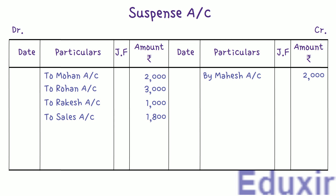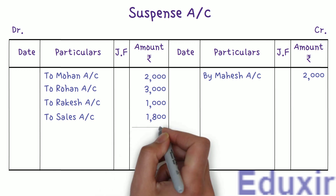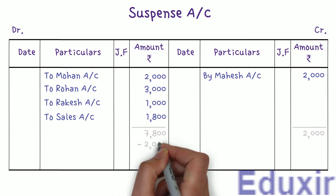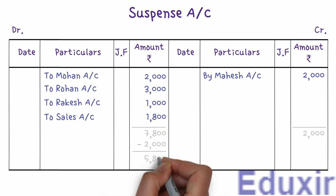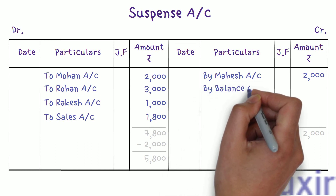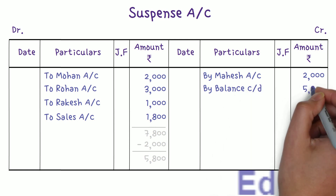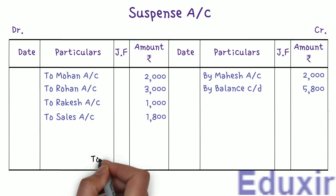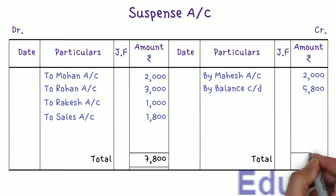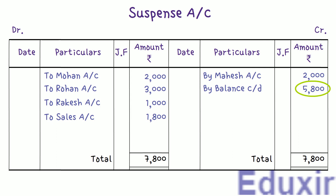The total on the debit side is 7,800 rupees and the total on the credit side is 2,000 rupees. 7,800 minus 2,000 equals 5,800 rupees. This is the debit balance, written on the credit side as 'By Balance Carried Down 5,800 rupees.' Both sides now total 7,800 rupees and the suspense account is balanced. This balance of 5,800 rupees is the difference in the trial balance, representing an excess debit. That brings us to the end of this solution.